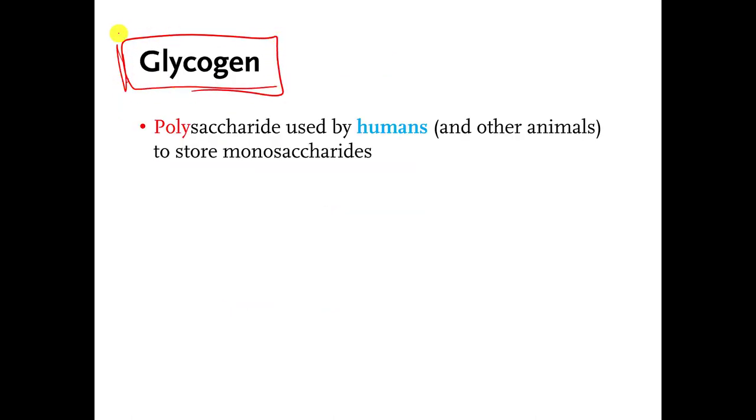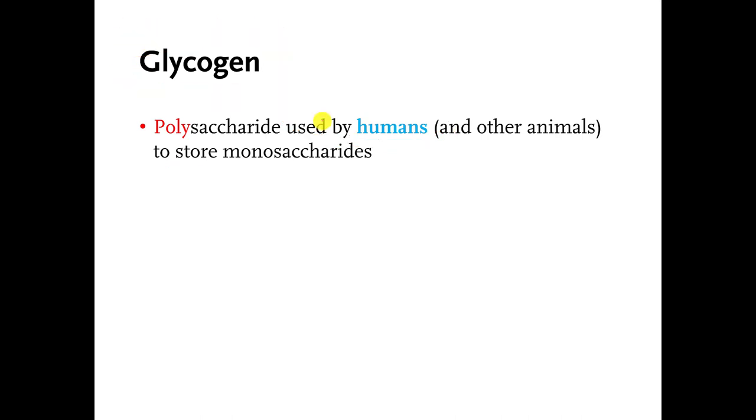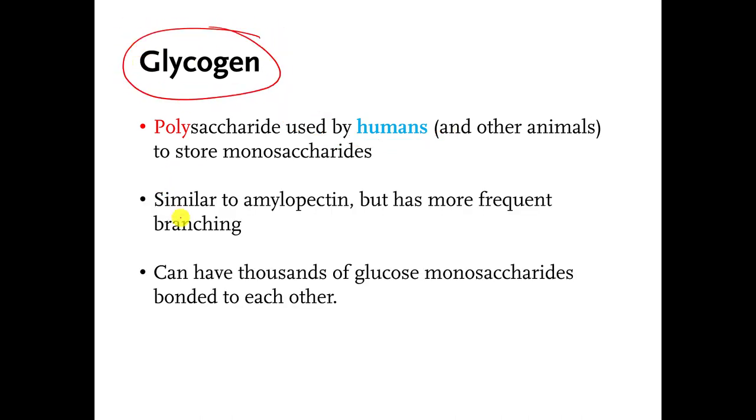This is the one I want you to know. There's a polysaccharide called glycogen. It is the one that humans make and use to store monosaccharides that they might need for later. Because this is the one that humans use, I want you to know that glycogen is a polysaccharide and we humans make it. You don't need to know any of this other stuff. You should know that glycogen is made of glucose monosaccharides.